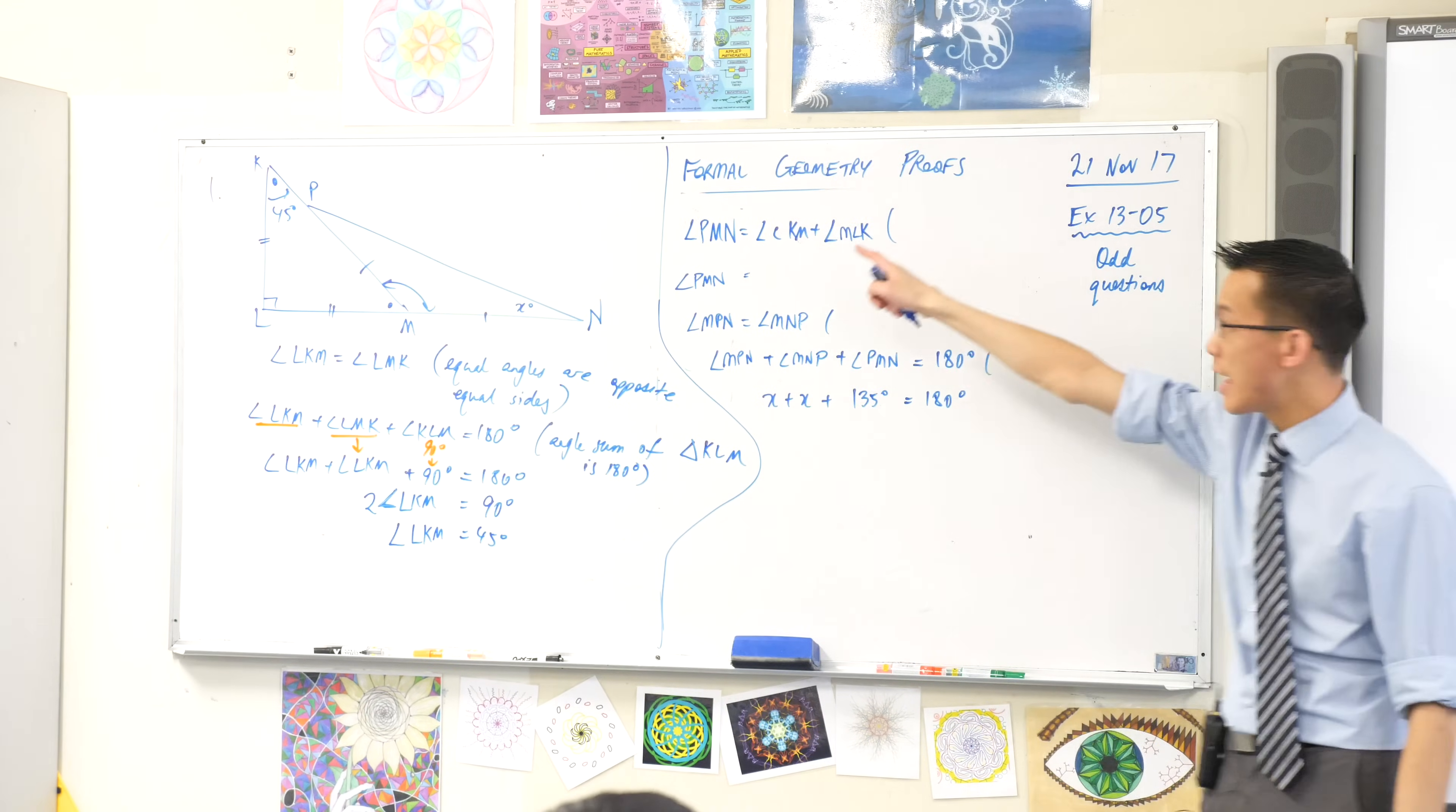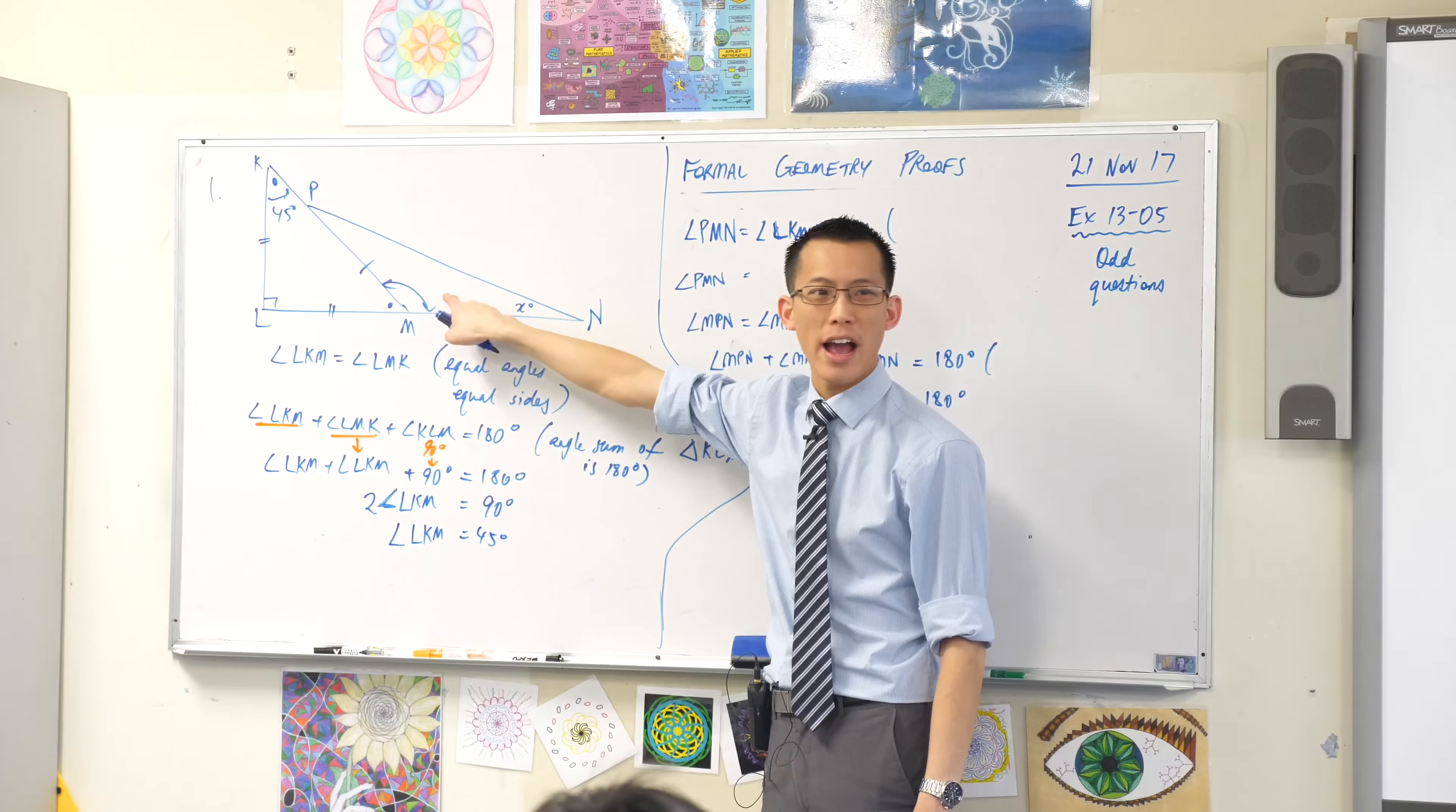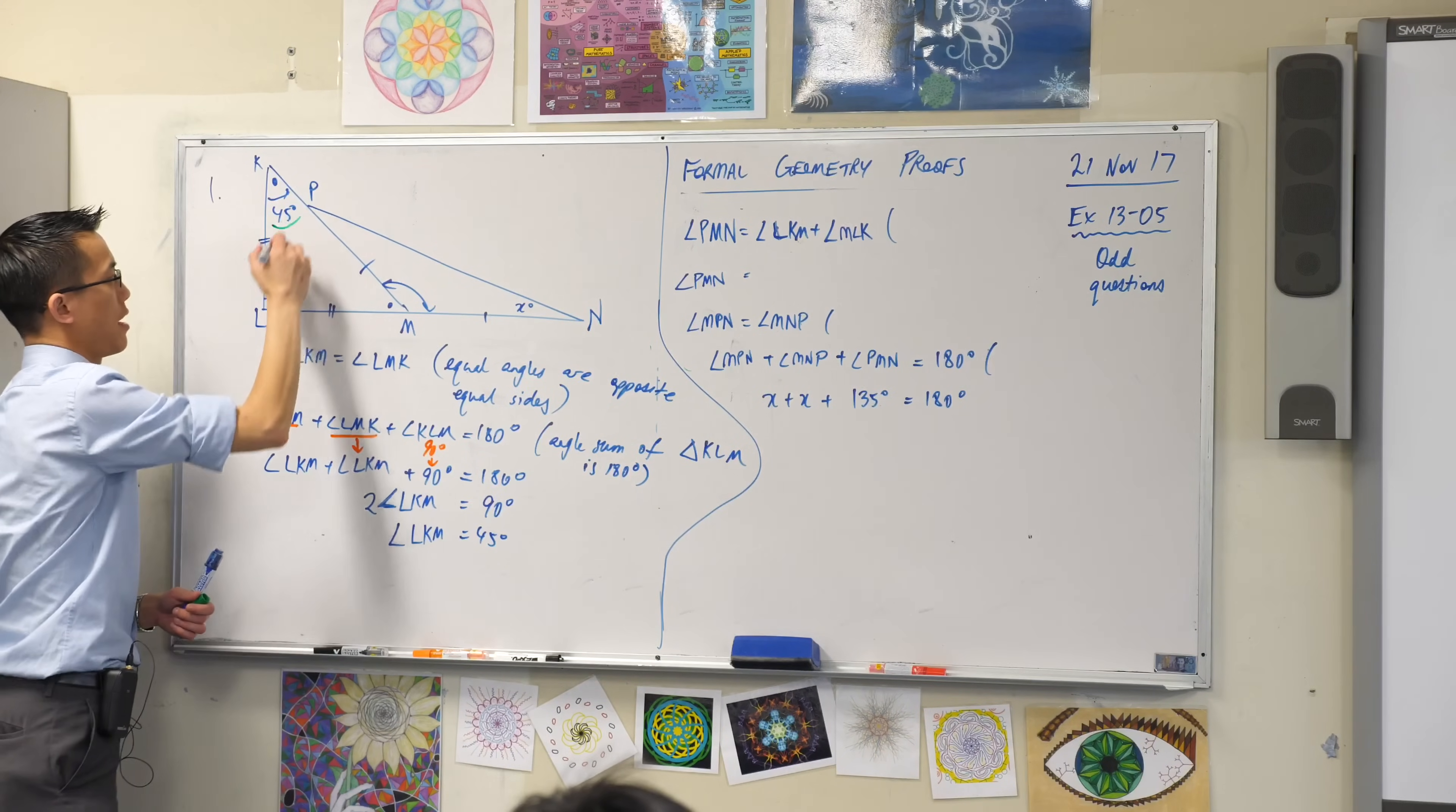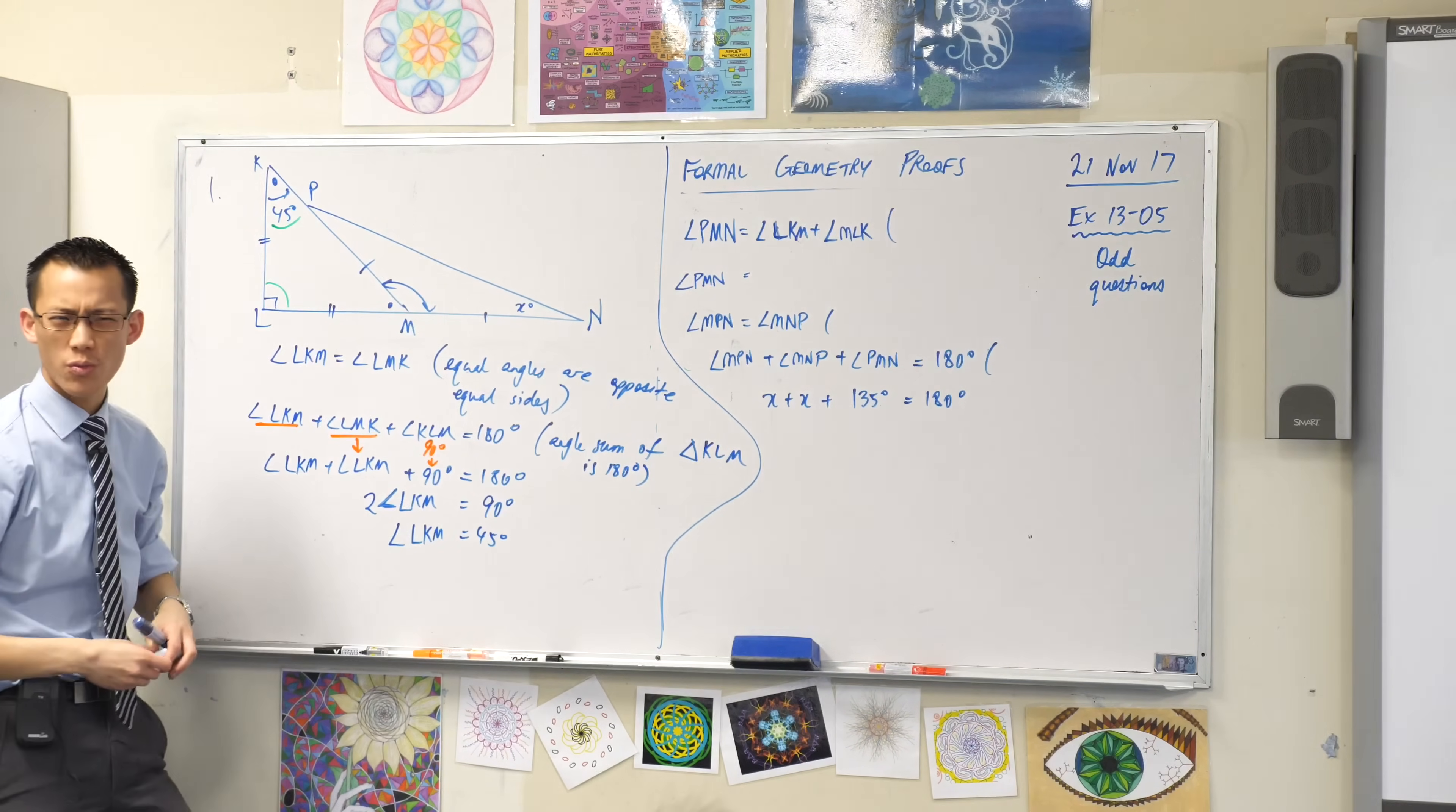You can see if we go there, I've said it's equal to these two angles in the other triangle. See PMN is in this lower triangle angle and these two, let me mark them in for you, are up here and over here. What's the reason that PMN equals these two over here? What's the reason?